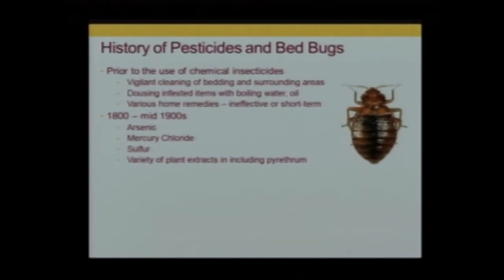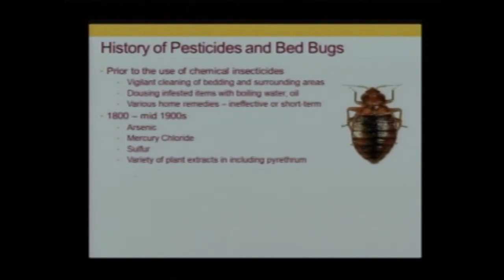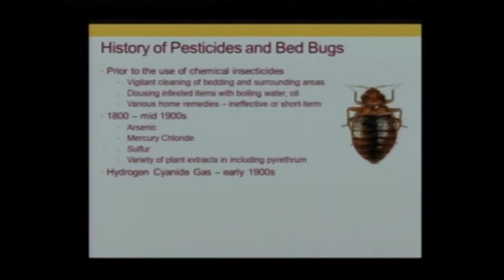Pyrethrum was a plant extract that is still used today in pyrethrum-type products. They can be used as flushing materials or insect bombs set off to get rid of cockroaches or whatever. Then we got into some very toxic materials — hydrogen cyanide was effective against a wide variety of critters.